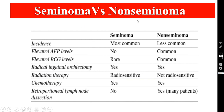What is the difference between seminoma and non-seminoma? Seminoma is the most common, whereas non-seminoma is less common. Elevated AFP levels are present only in non-seminoma and not in seminoma. Elevated HCG is also more common in non-seminoma but can rarely occur in seminoma. Radical inguinal orchidectomy should be done in both cases. Radiation therapy is effective only in seminoma but not in non-seminoma. Chemotherapy is given for both, especially in late stages. Retroperitoneal lymph node dissection is done only in non-seminoma.